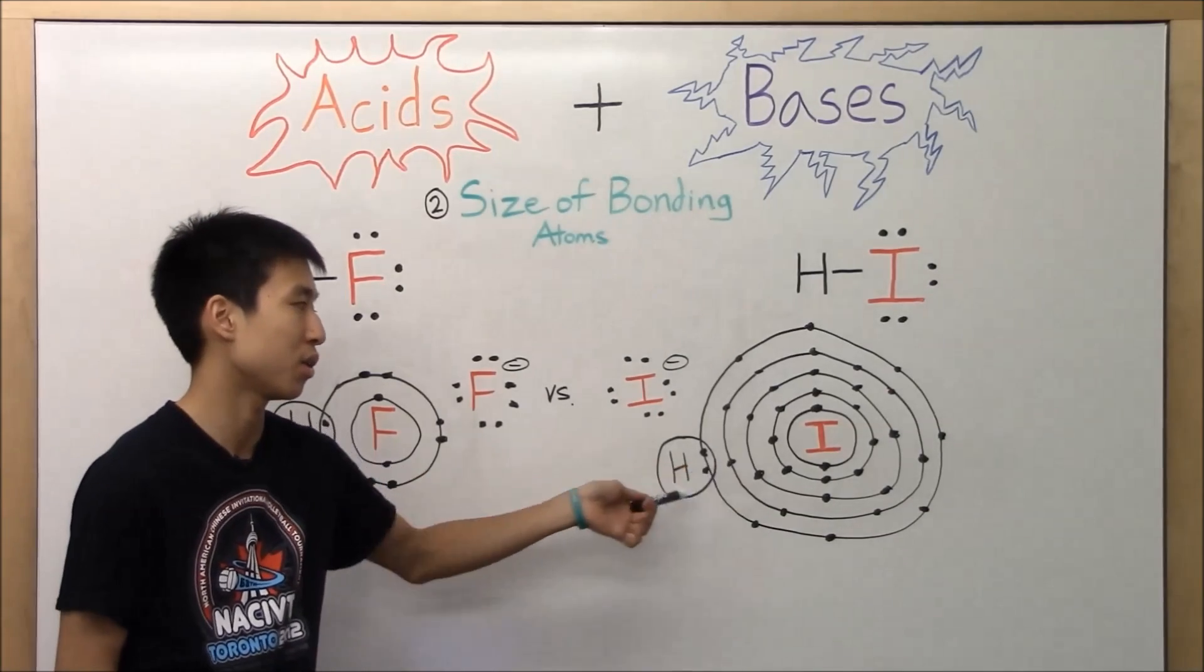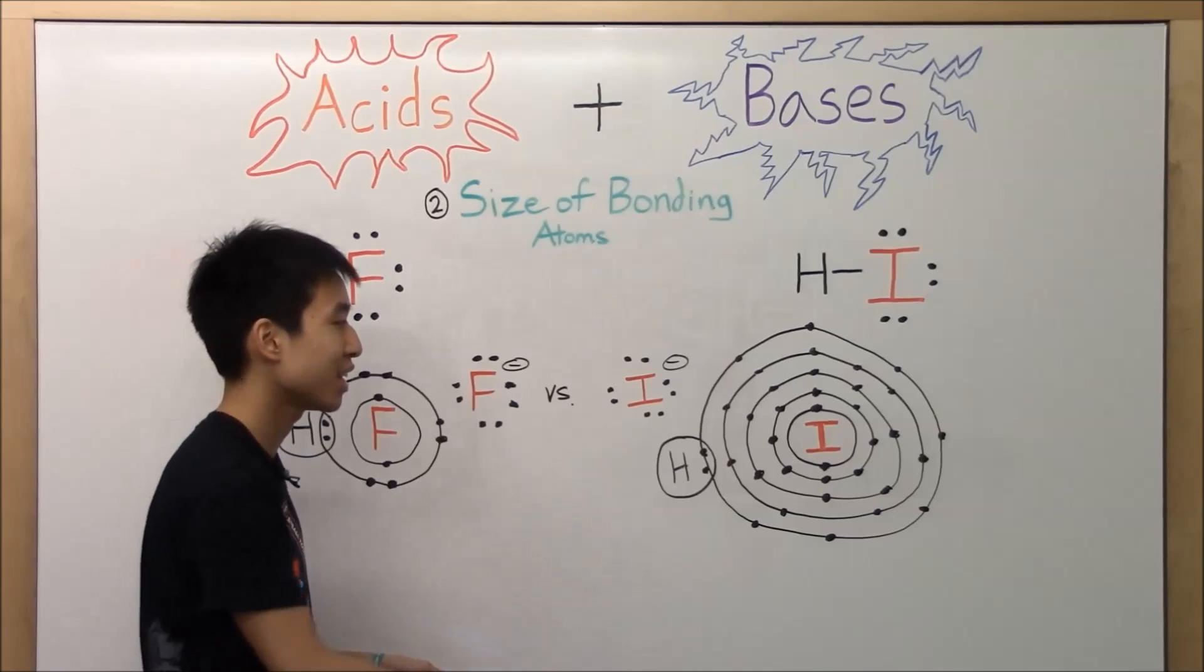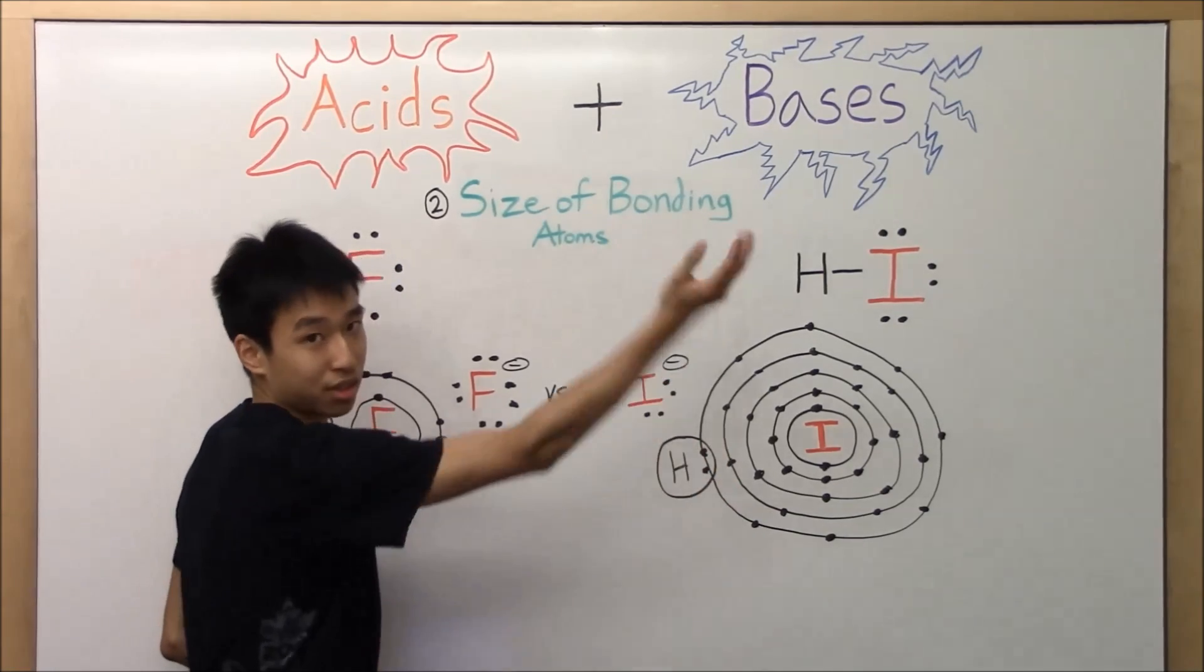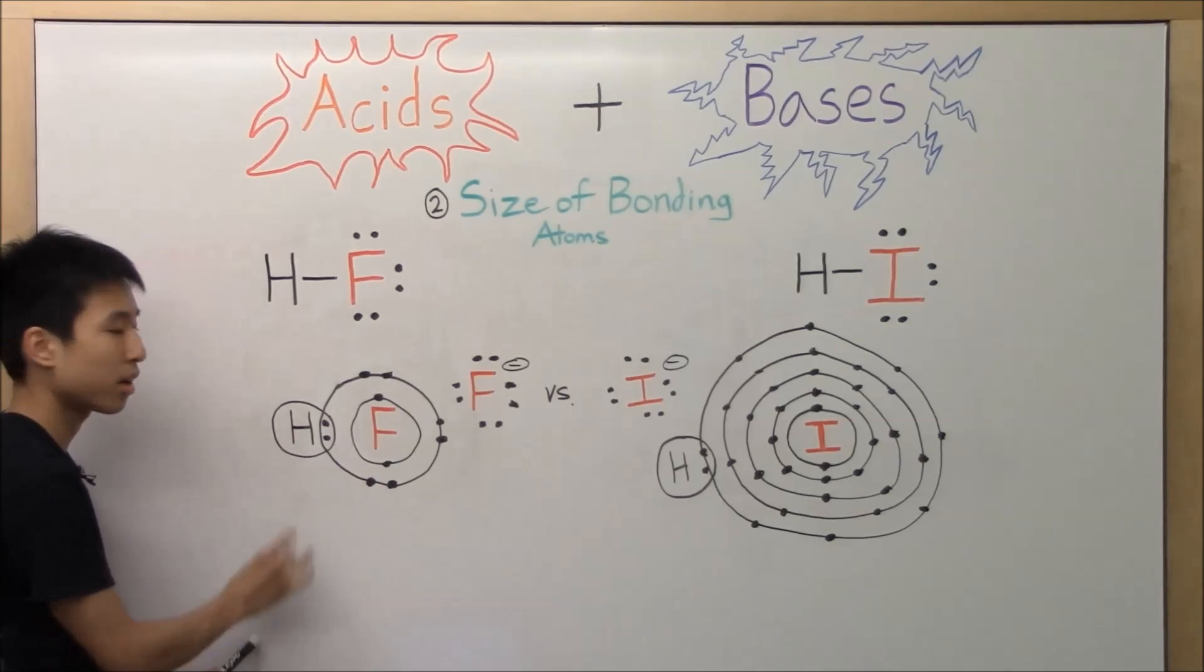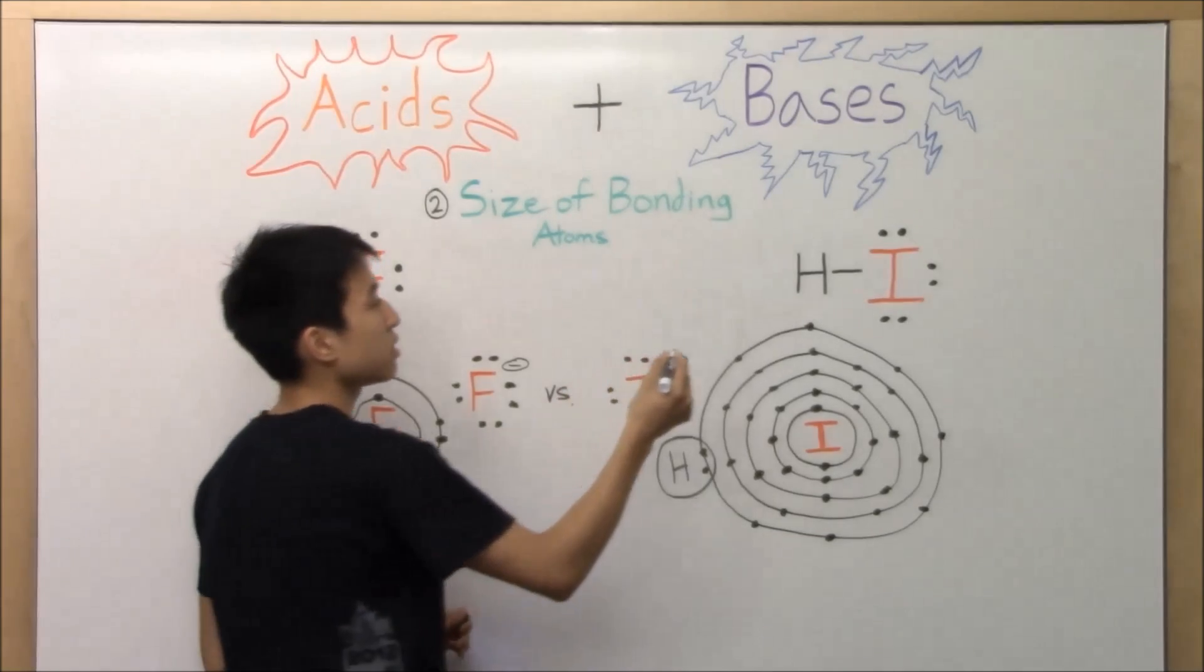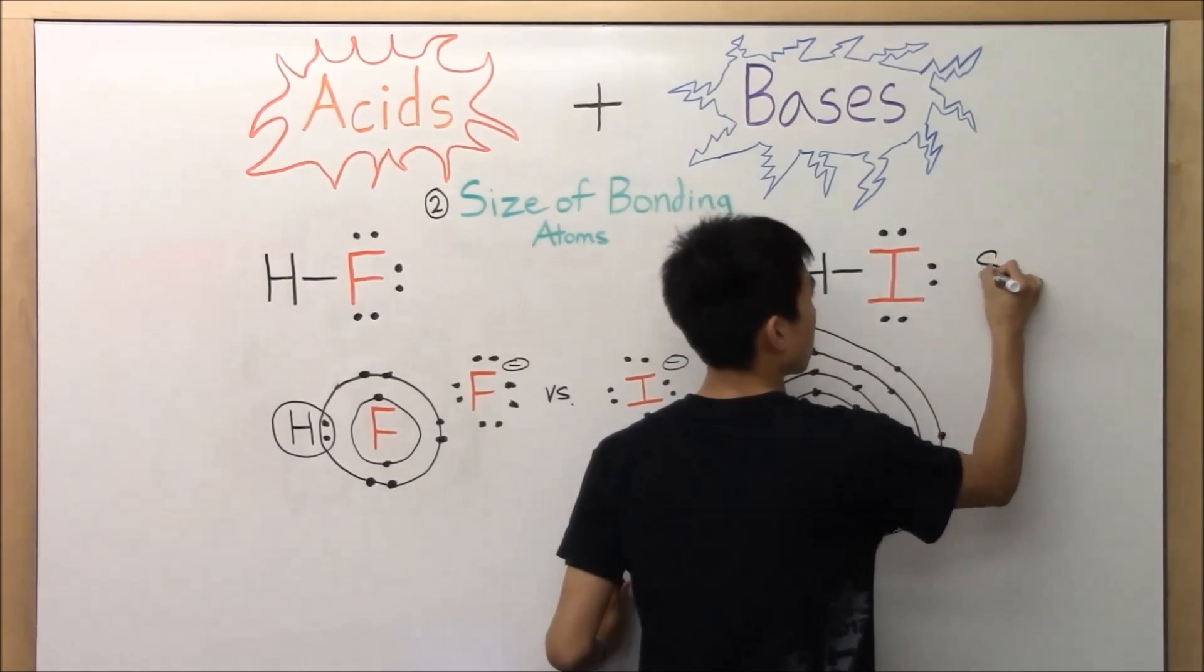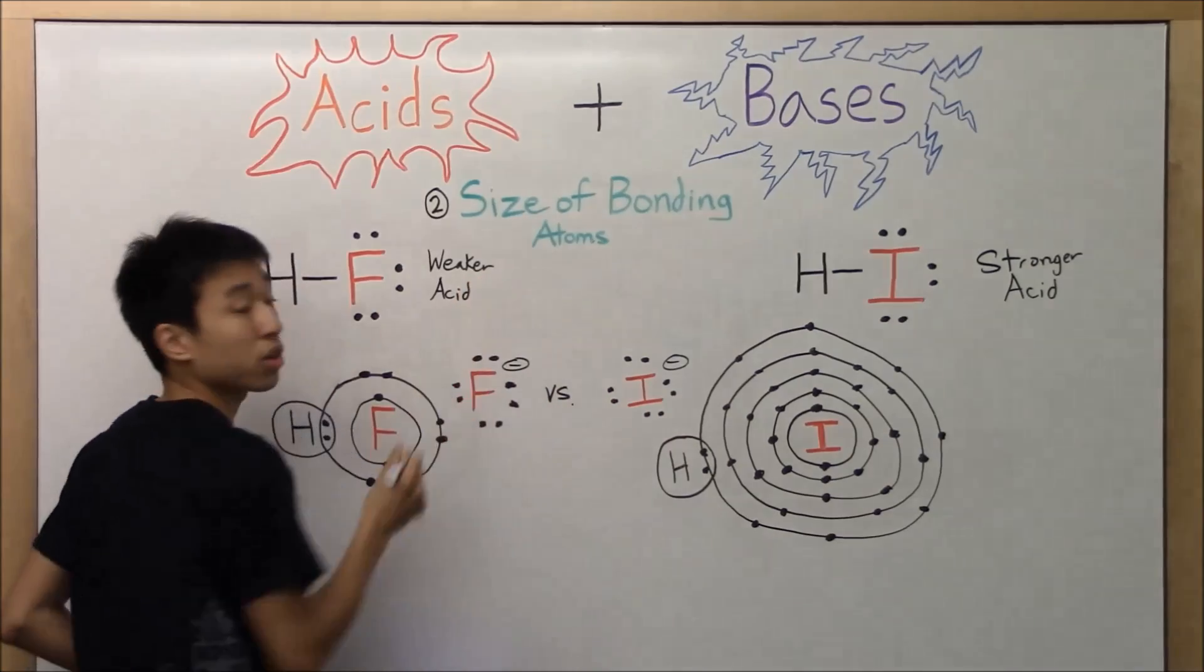It's this one. Because it has a longer bond distance, meaning the hydrogen's hanging on for dear life, basically. He's barely hanging on. I just flick it. He goes flying. HF, the bond is closer, stronger. I flick it. It's going to take a harder flick to kick it off, basically. So this is the stronger acid. And this is going to be the weaker acid.